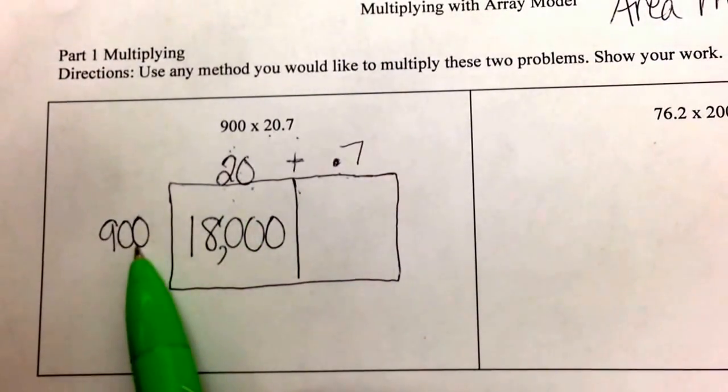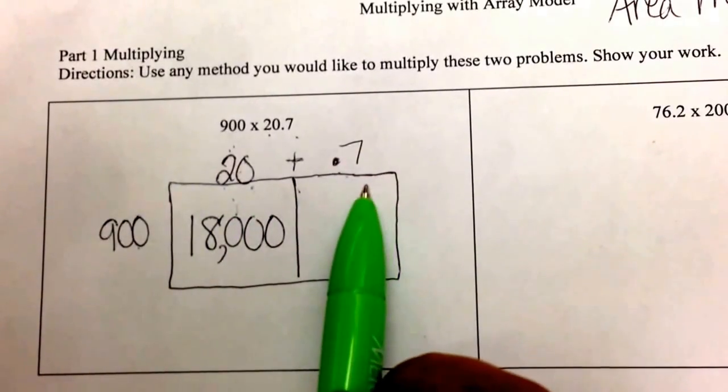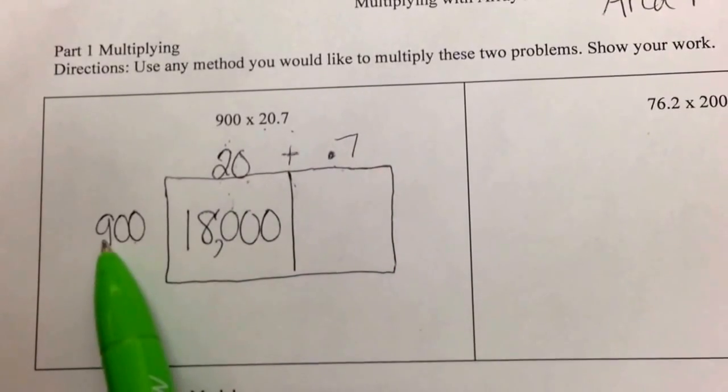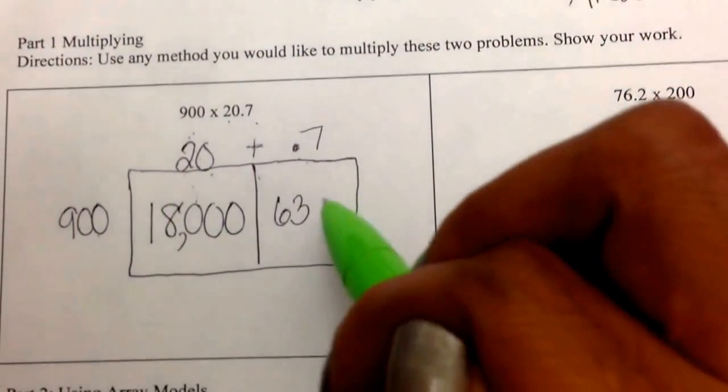Numbers where I'm just multiplying in the front and in the back, I'm just dealing with the zeros for place value. We'll do the same thing here. Ignore the decimal. 7 times 9 is 63, and I also have two zeros, so I'll put them right behind.